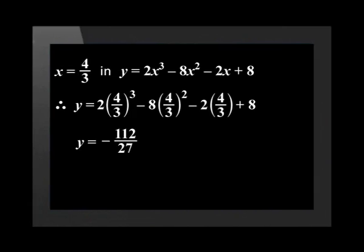Punching these values into the calculator gives an answer of minus 112 over 27. Therefore, the point of inflection of the curve is 4 divided by 3 and minus 112 divided by 27.